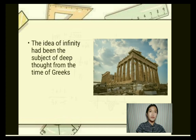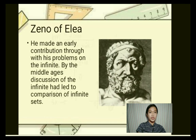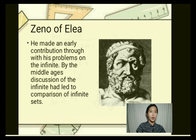The idea of infinity had been the subject of deep thought from the time of the Greeks. Zeno of Elea was a Greek philosopher famous for posing so-called paradoxes, which challenged mathematicians' view of the real world for many centuries. He made an early contribution through his problems on infinity.